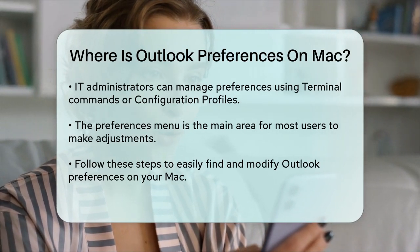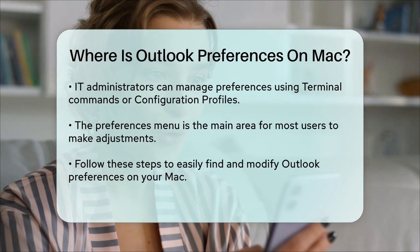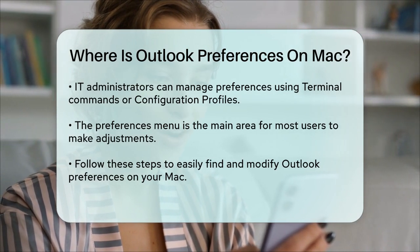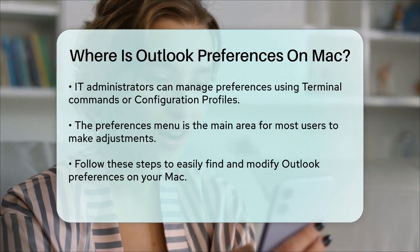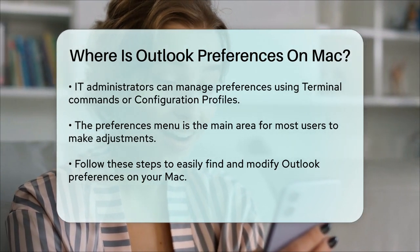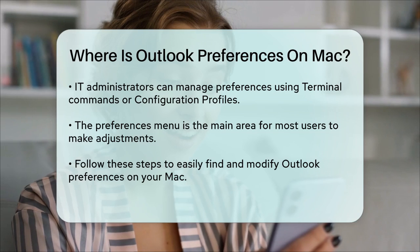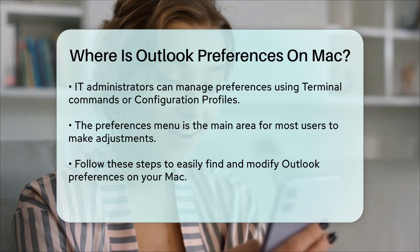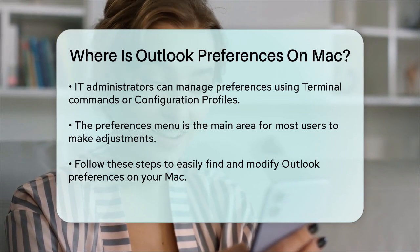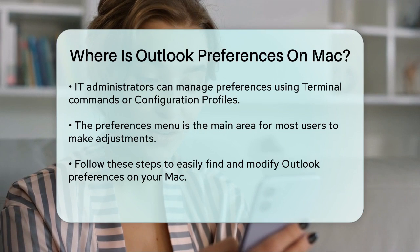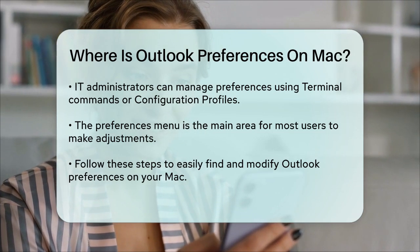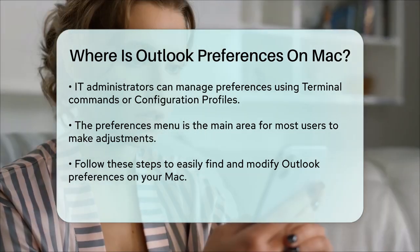So to summarize, to find Outlook Preferences on your Mac, simply open Outlook, click on the Outlook menu at the top, and select Preferences from the drop-down menu. From there, you can navigate through the various tabs to adjust the settings as needed.